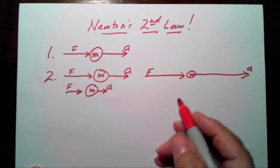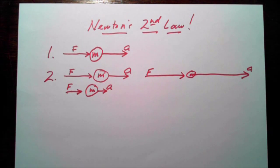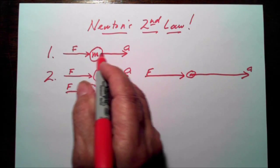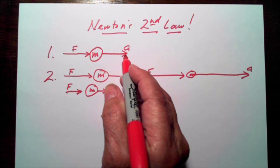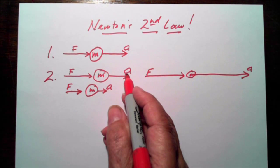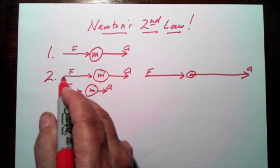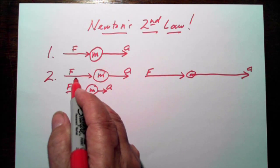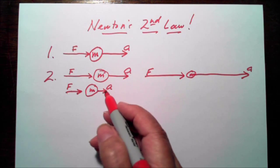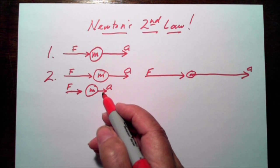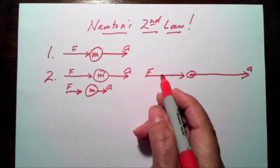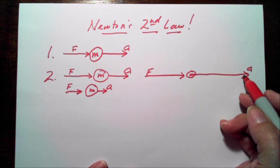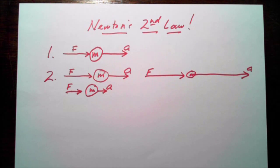Force, mass, and acceleration. A force acting on a mass will cause the mass to accelerate in the direction of the force, and the acceleration is proportional to the force. Half of this force acting on that same mass will give me half the acceleration, and twice this force acting on that same mass will give me twice the acceleration.